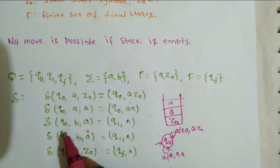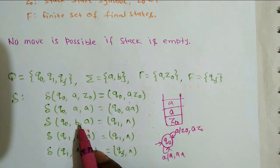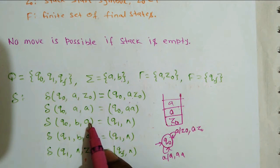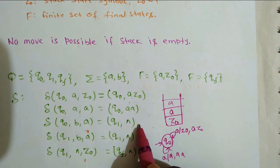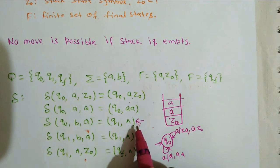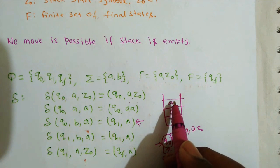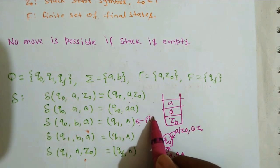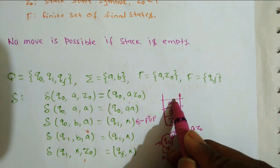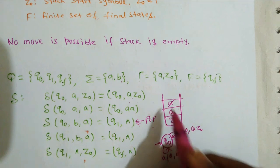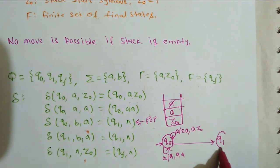The next transition says: on state q-naught, if 'b' appears and the top of the stack is 'a', it goes to state q-naught. The null symbol here represents popping from the stack — you delete one item from the top of the stack. So when 'b' comes, the top of the stack is popped by one element and it moves to state q1.